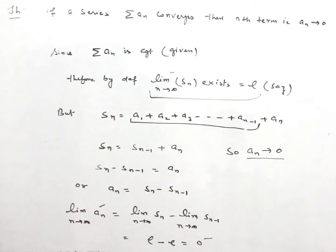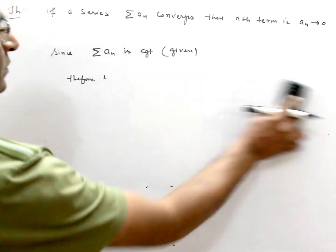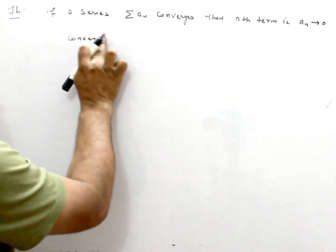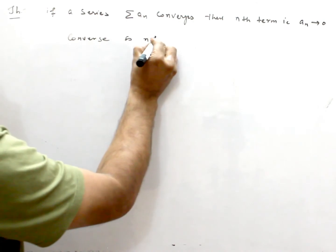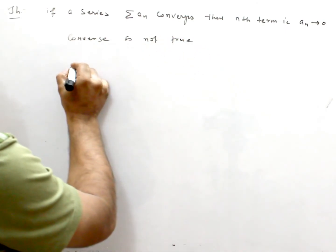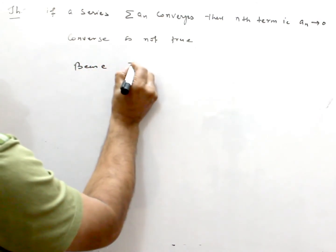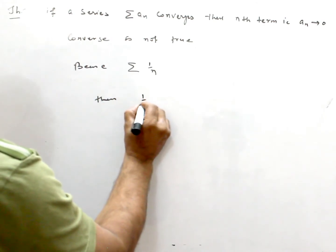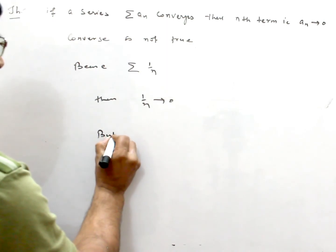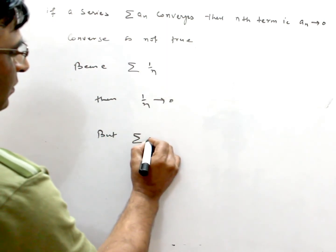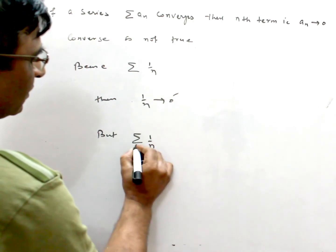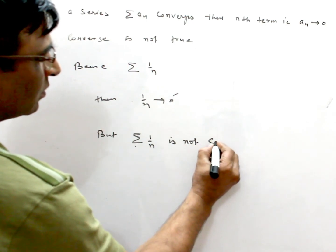So AN converges to zero. Now, what about the converse? The converse is not true, because if I take the series 1/n, then 1/n approaches zero — we know that — but the nth term converges to zero while the series 1/n is not convergent.